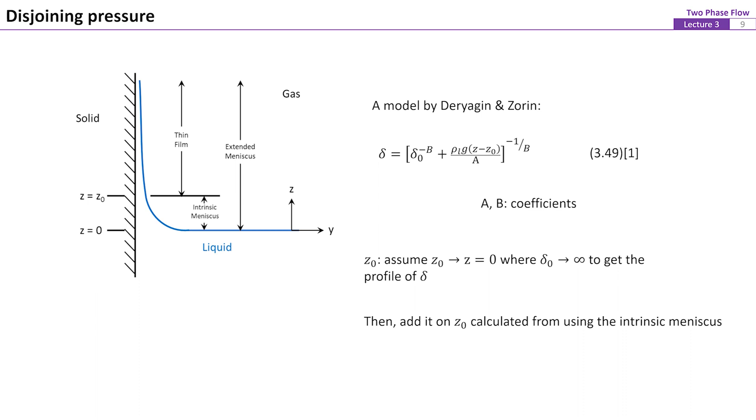With a derivation based on the disjoining pressure, gravity, and the thickness of the film, delta, a relation for predicting the variation of the liquid film thickness versus z can be obtained. In practice, the baseline z0 of this model is approximated with z equals 0 and the thickness of the liquid film corresponds to z at 0 is infinity. Therefore, the first term in equation 49 is eliminated and a profile of delta versus z can be determined. This thickness profile of the thin film is then added above the intrinsic meniscus from z equals z0 to complete the extended meniscus.